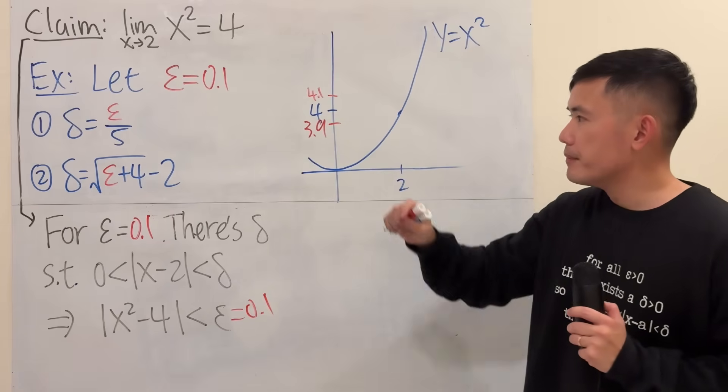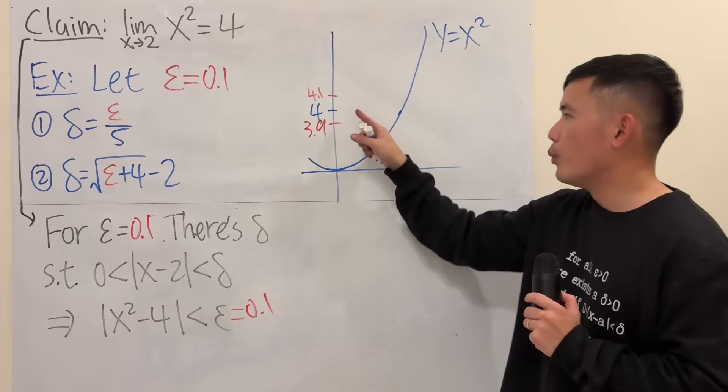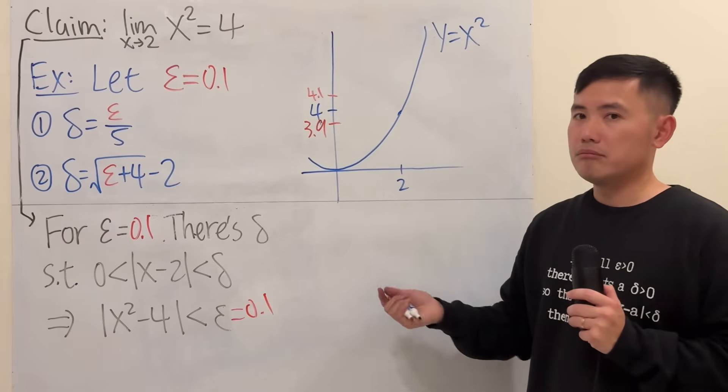And now, keep in mind, they are the same distance. Both of them are epsilon. One is going up, the other one is going down. That's all.